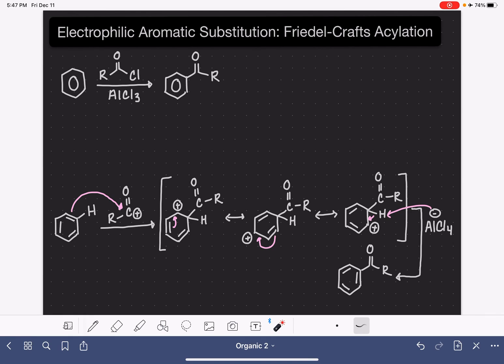The Friedel-Crafts acylation reaction allows us to add a carbon-oxygen double bond with a carbon chain to a benzene ring. The acyl group, which isn't a super common term, is referring to this reagent right here: carbon-oxygen double bond with an alkyl group on one side and a chlorine on the other.